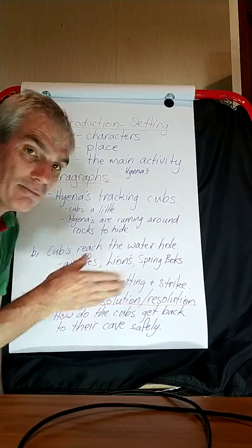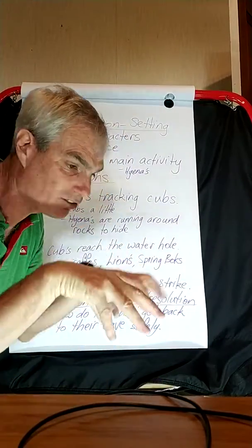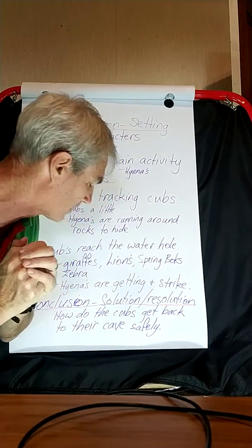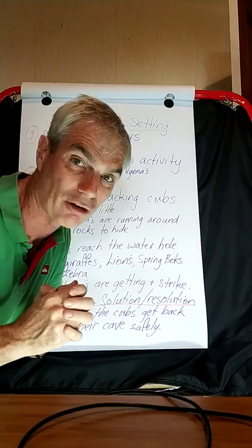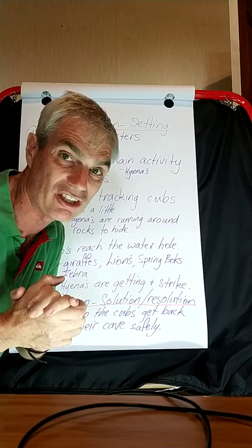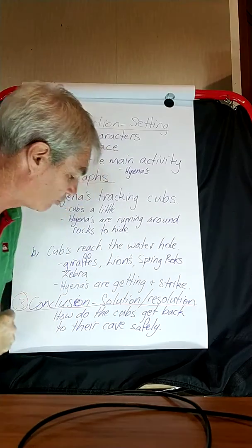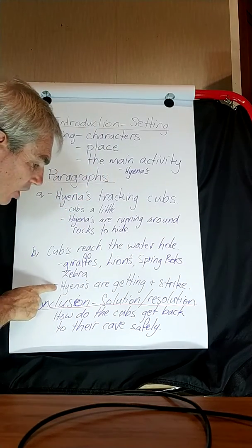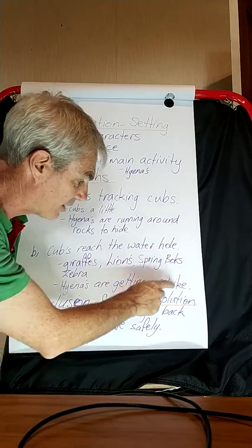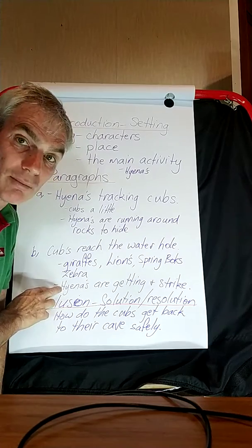And what are the cubs doing? They might be running in and out of the different animals' feet — obviously not the lions, because they would try and get the cubs. But they might be having a great time in the water and you could describe that. Maybe the mum and dad cheetah are really struggling to look after the baby cubs. The hyenas are getting there and they might strike — so that might be what the main problem is.